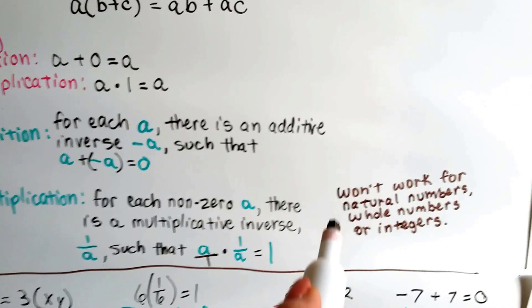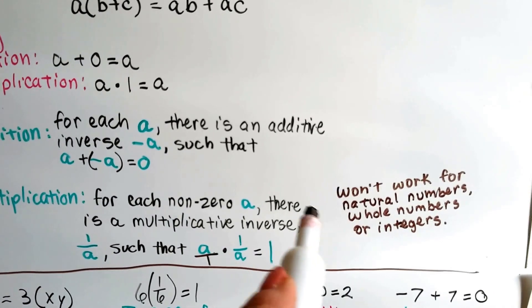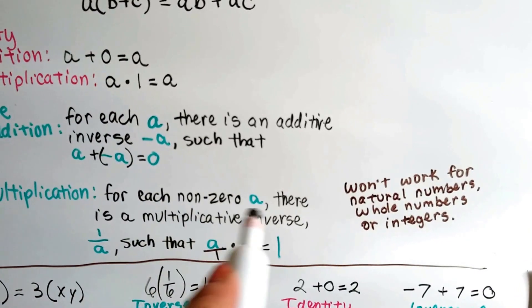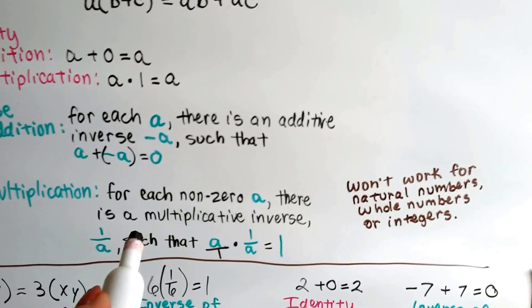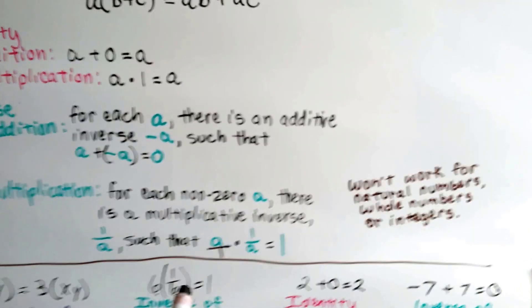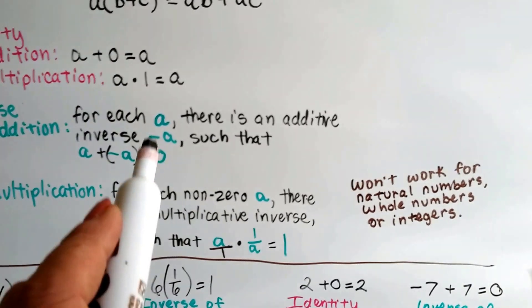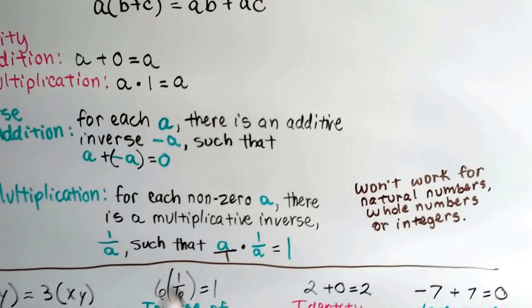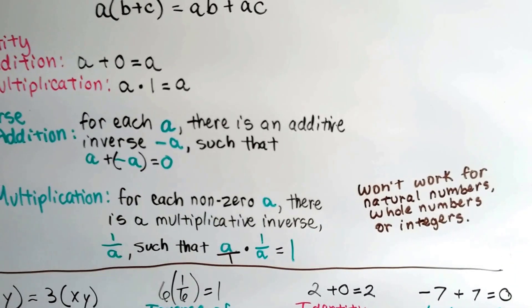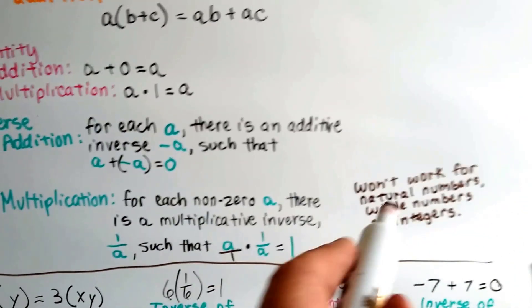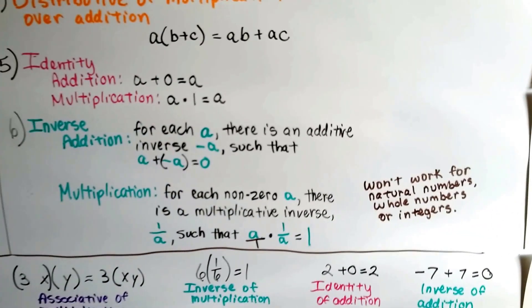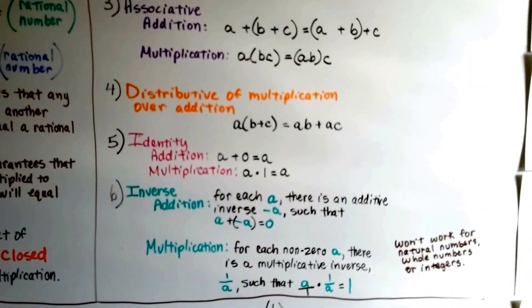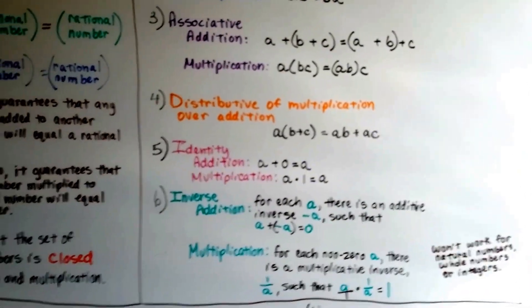Natural numbers and whole numbers don't have a negative, so we can't say negative a, and natural numbers don't have a zero, so it doesn't work for those. It would work for real numbers because they include all rational numbers.